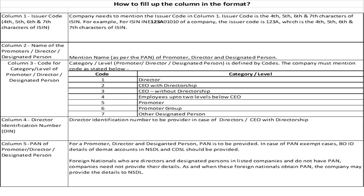The category codes are: Director - 1, CEO with Directorship - 2, CEO without Directorship - 3, Employee up to 2 levels below CEO - 4, Promoter - 5, Promoter Group - 6, and Other Designated Person - 7. Column 4 - Director Identification Number is to be provided in the case of Directors and CEO with Directorship.